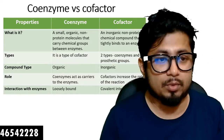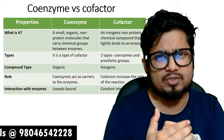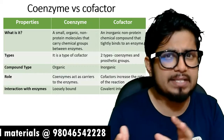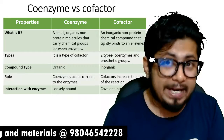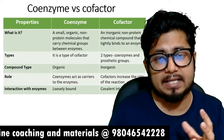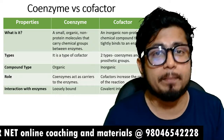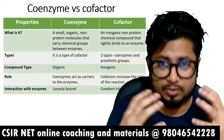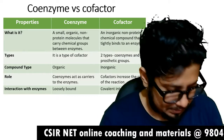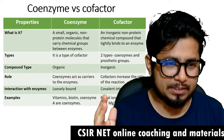Coenzymes interact with enzymes through very weak, loose interactions, so it is very easy to separate coenzymes from enzymes. But cofactors are attached as metal ions in many cases, and some other factors attach to the enzyme with covalent binding. Covalent interactions are the strongest, and cofactors cannot be easily separated from their respective enzymes.